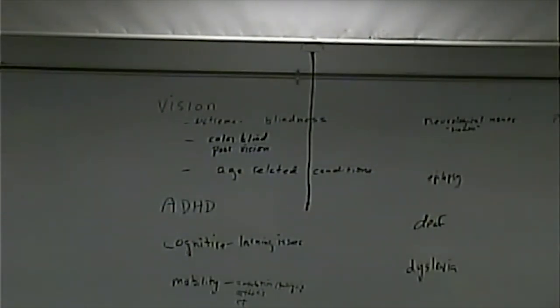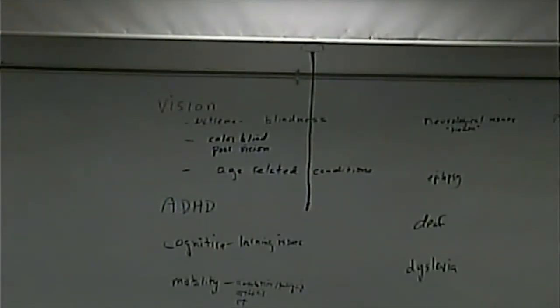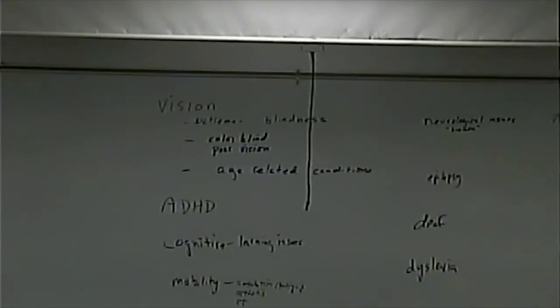So what I'm going to do is take a picture of this list, post it to Canvas, and we'll pick up next time analyzing how people with these disabilities are affected, whether there are minor versions of these disabilities, and what we can do to accommodate that — keeping to the principles of keeping it simple and using multiple presentations.